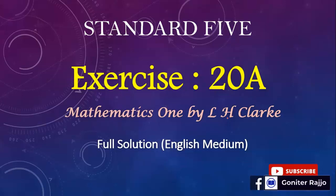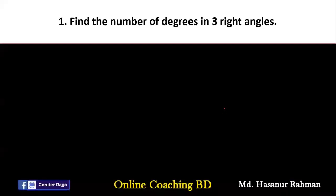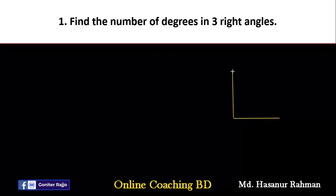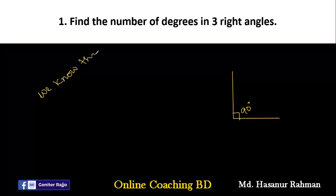Assalamu alaikum. Today we will solve exercise 28 from mathematics. Number one says: find the number of degrees in three right angles. So what is a right angle? If the measurement of one angle is 90 degrees, then we can say this is a right angle. This angle will be called a right angle.